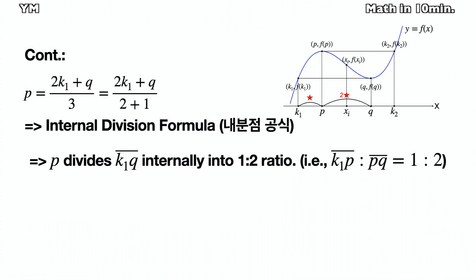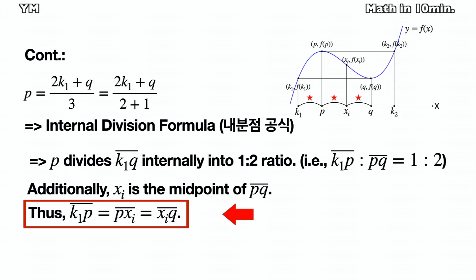So we know that p divides the line k1q into 1 to 2 ratio. So the ratio of the line k1p to line pq is 1 to 2. That means the line k1p is equal to the half of the line pq. Additionally, since xi is the x value of the inflection point, both the line pxi and line xiq are equal to the half of the line pq. So we get the result as below.